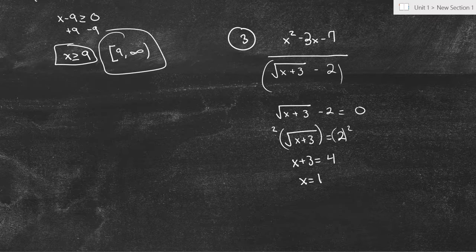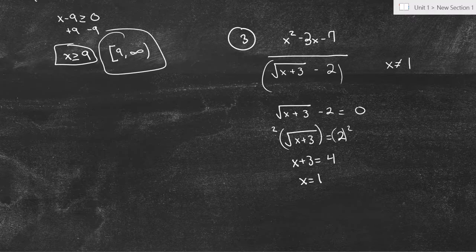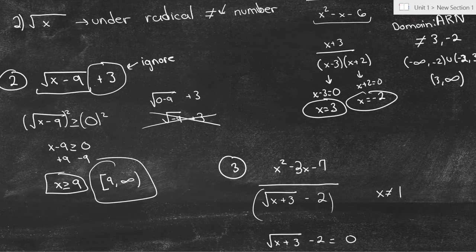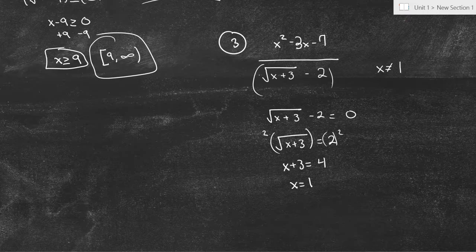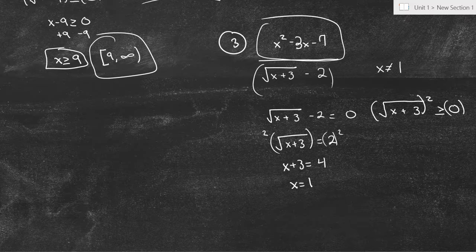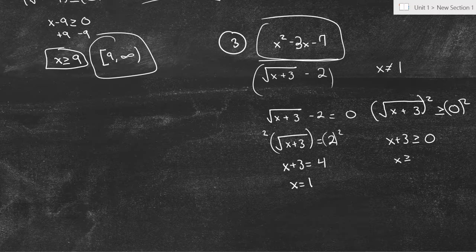So x cannot equal 1, because when x equals 1, we get 1 plus 3 equals 4, square root of 4 is 2, minus 2 equals zero — the denominator is zero. That's our first restriction. Now for the radical: under the radical cannot be negative, so x plus 3 has to be greater than or equal to zero. Squaring both sides: x plus 3 is greater than or equal to zero, so x is greater than or equal to negative 3.